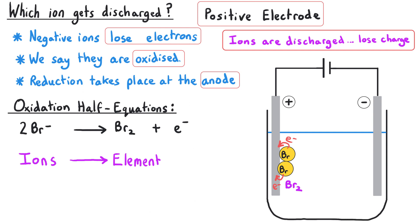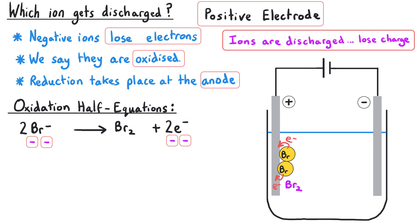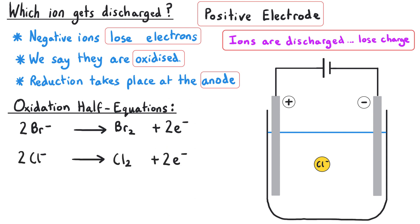Since this is oxidation, electrons appear on the right-hand side. The two bromide ions give a total charge of −2 on the left, but currently the right-hand side is only −1. Both sides need to be −2, so we put a 2 in front of the electrons: 2Br⁻ → Br₂ + 2e⁻. This makes sense: each bromide ion is −1, they become neutral by losing an electron each. The half equations are very similar for all halide ions — if we had chloride instead of bromide, the equation is essentially the same with the symbol swapped: 2Cl⁻ → Cl₂ + 2e⁻.